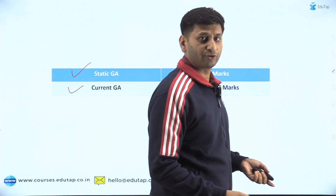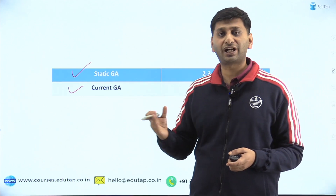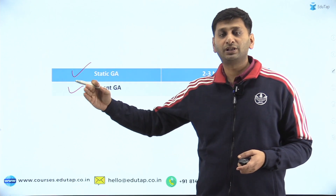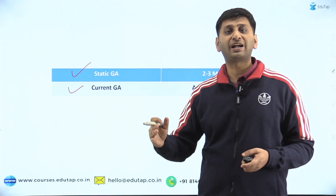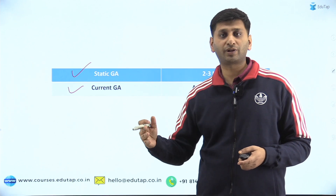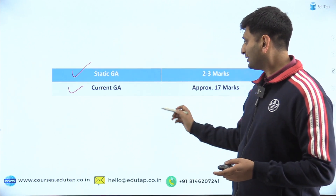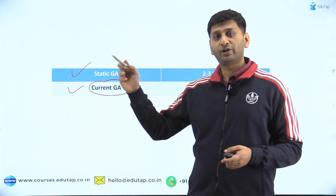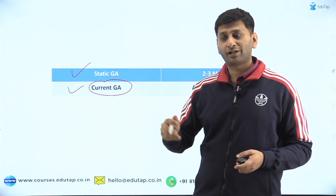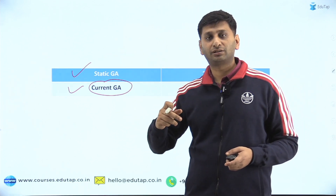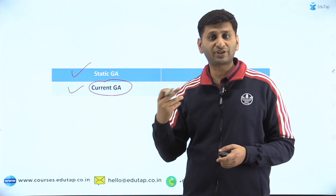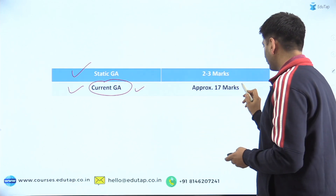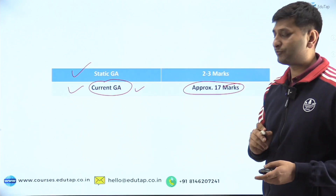Static GA is something which remains static — like where is a particular wildlife sanctuary, where is a particular thermal power plant. All this is static GA because it doesn't change over time. Current GA is something related to current events — who has been given the Booker Prize this year, who has won Wimbledon this year, where the first national park or bird sanctuary has been set up. Questions like these belong to current GA, which is approximately 17 marks. This is phase one I'm talking about.